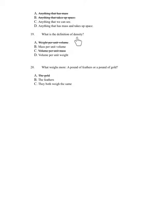Number 19. What is the definition of density? A. Weight per unit volume. B. Mass per unit volume. C. Volume per unit mass. D. Volume per unit weight.